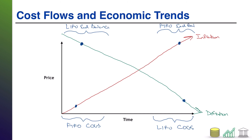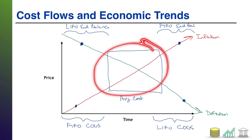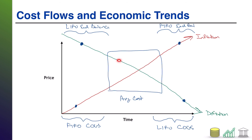Average cost is actually a little less susceptible to these problems. Because average cost just weights the earlier prices and the later prices together and comes up with an average, it's always going to fall somewhere in the middle. It's going to be less volatile to these economic trends — you might still move around, but not as extreme as the outer points. Average cost smooths out those economic trends and draws the range in a bit tighter.